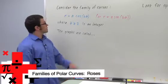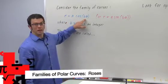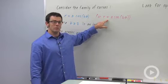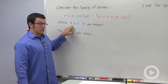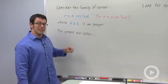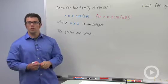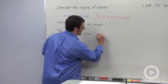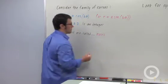Let's take a look at another family of curves, r equals a cosine b theta or r equals a sine b theta, where b is greater than or equal to 2 and it's an integer. These graphs are called roses. Each of them is sort of a flower shape.